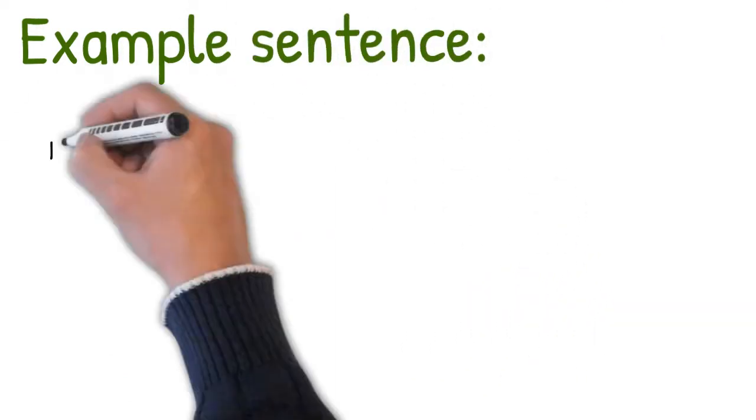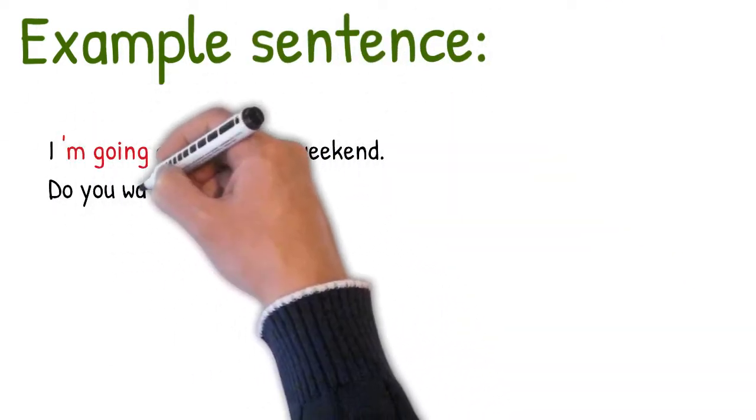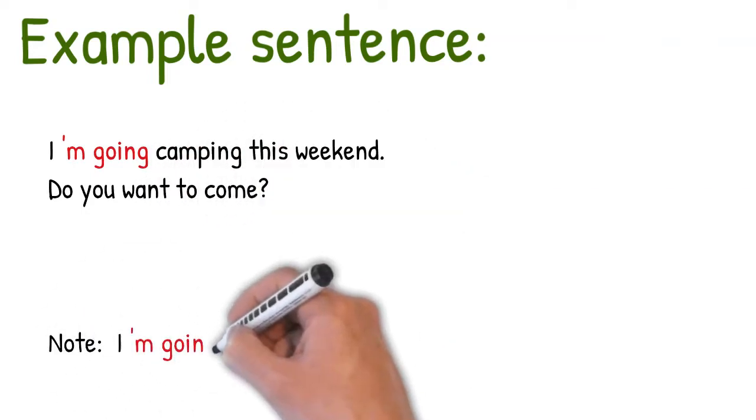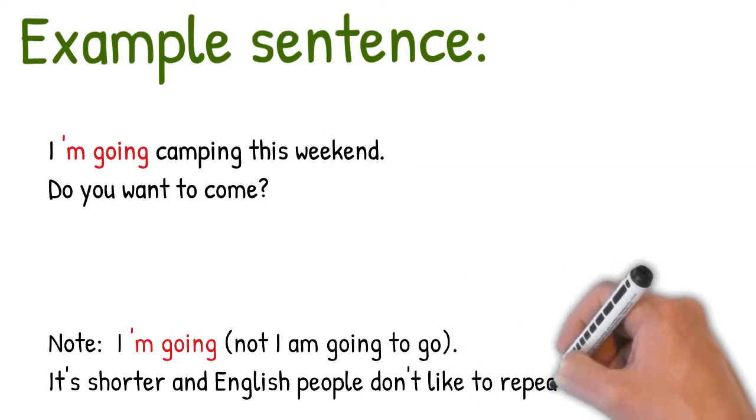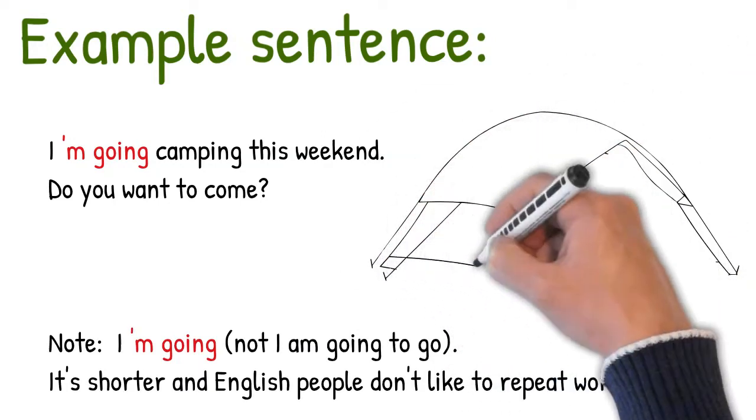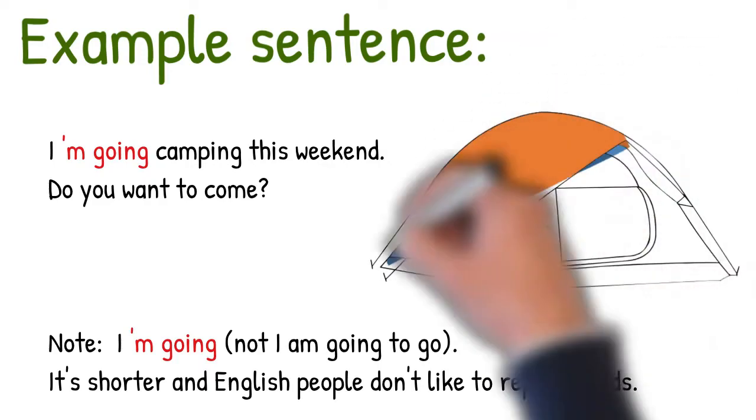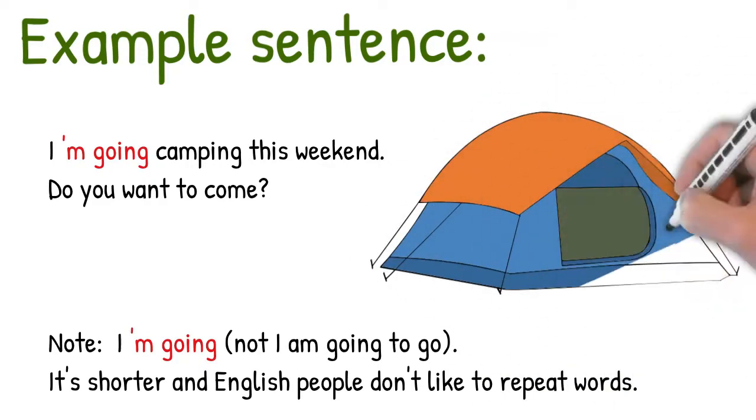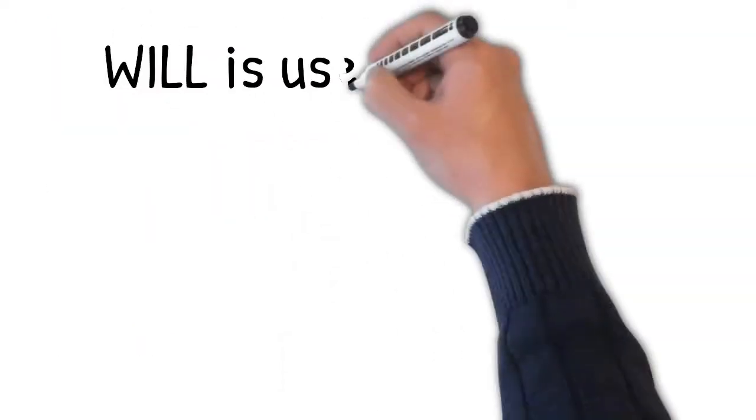Here's another example. I'm going camping this weekend. Do you want to come? I'm going camping. Note, I didn't say I'm going to go camping. Both are equally correct in this situation. Let's just say it's shorter and English people don't like to repeat words. But there's another secret reason why. And that is the present continuous can be used just like be going to with plans made before speaking.